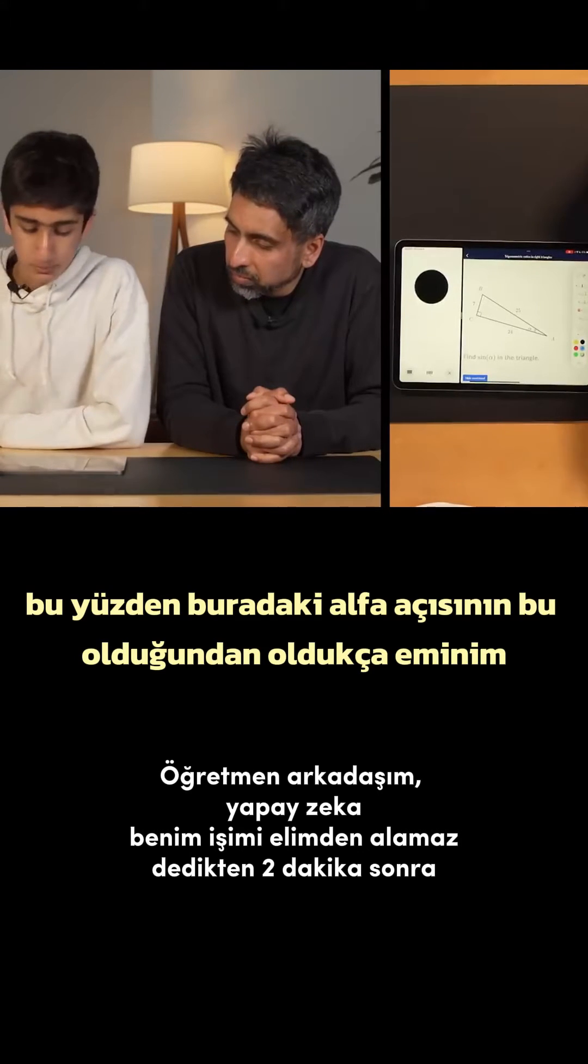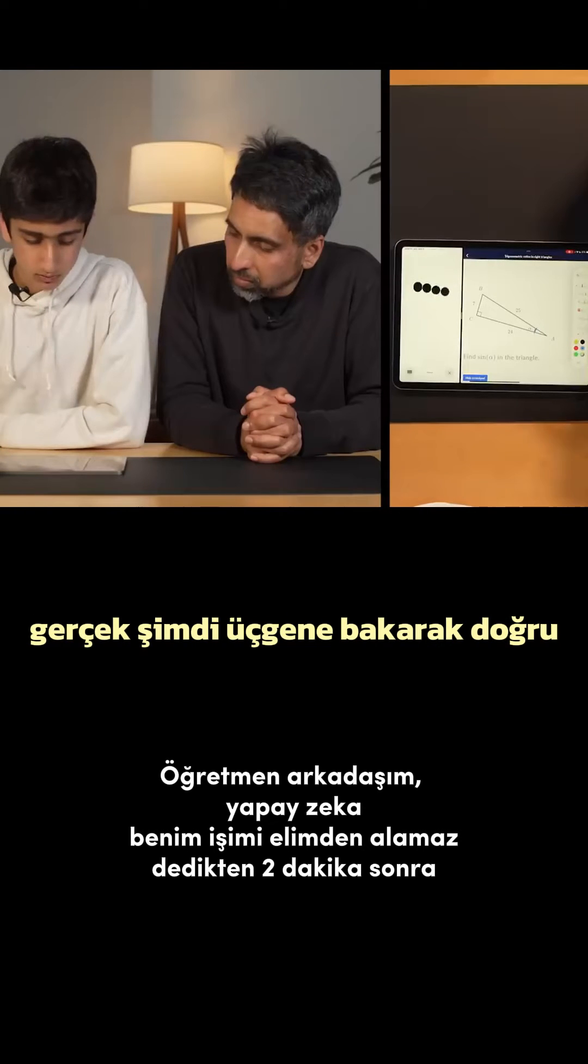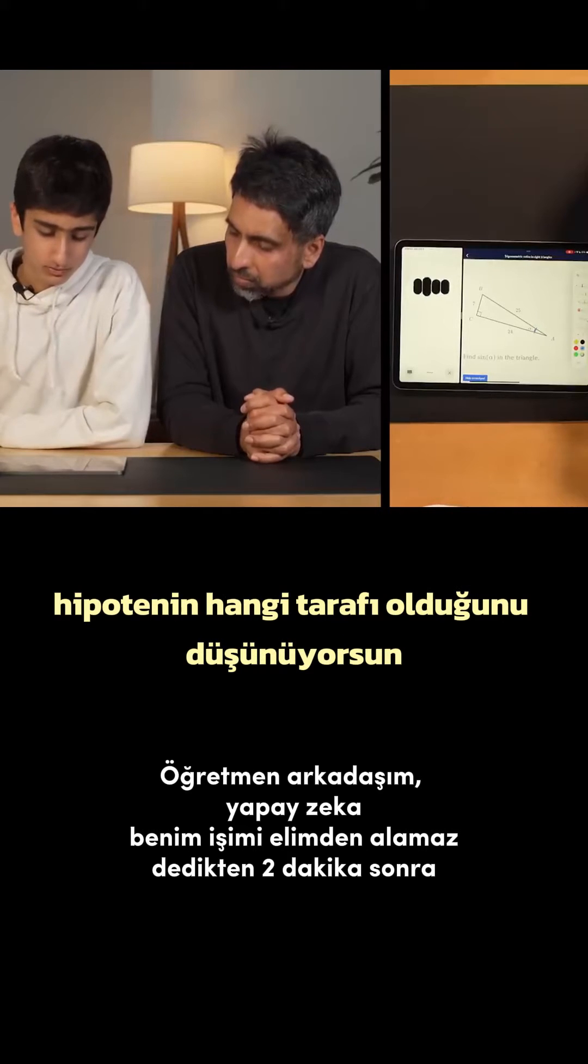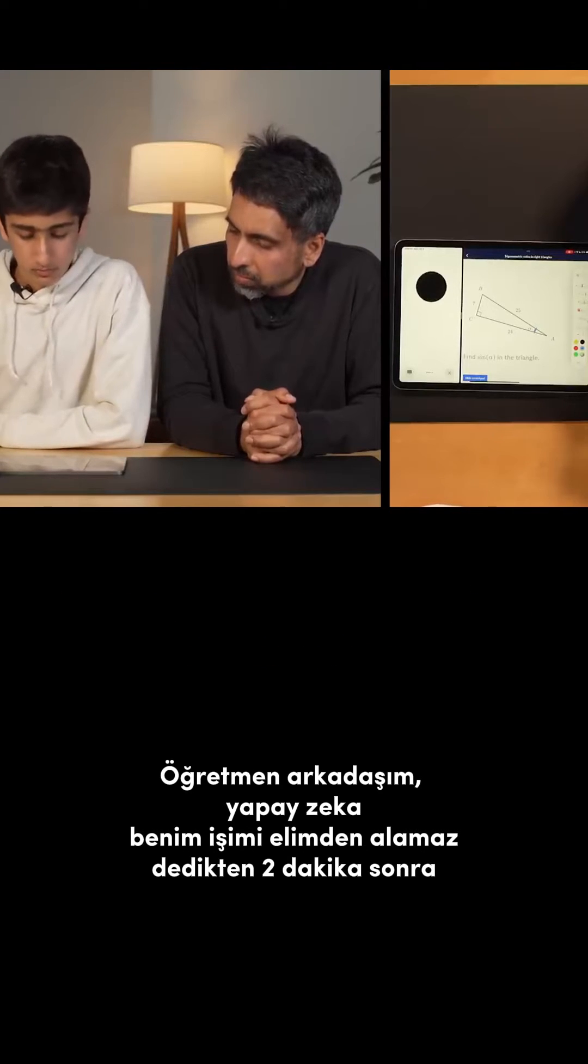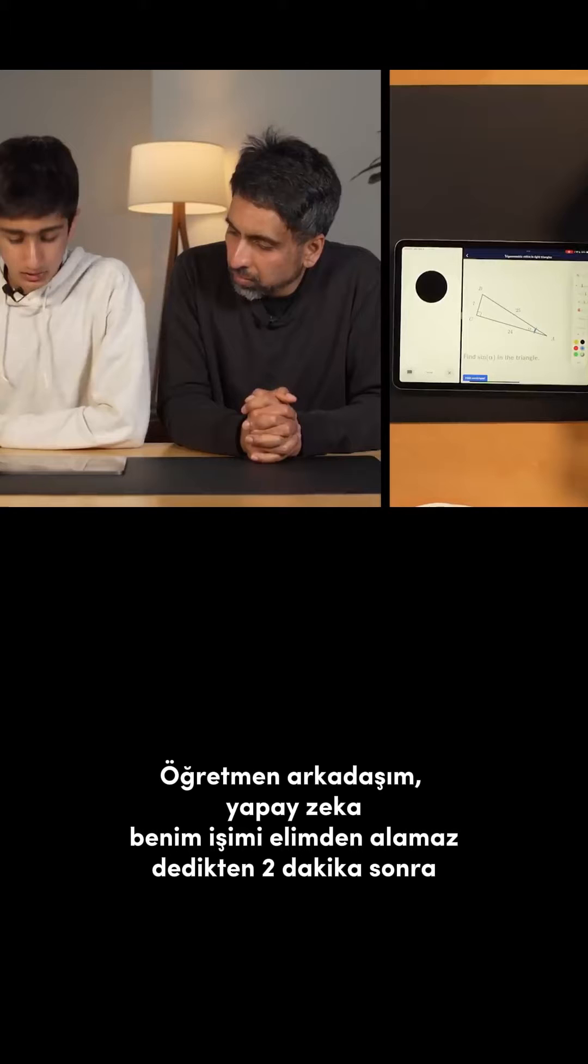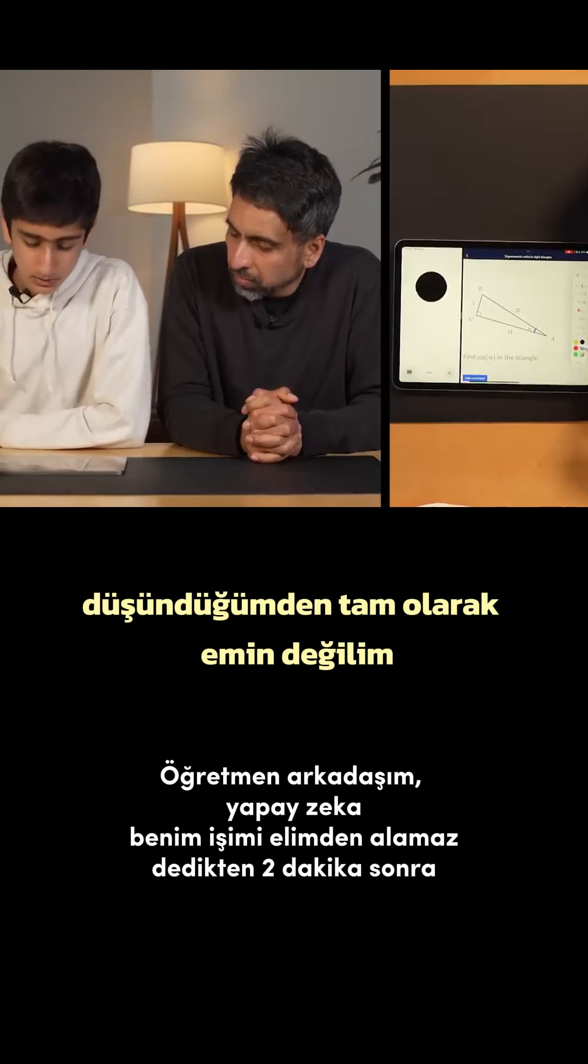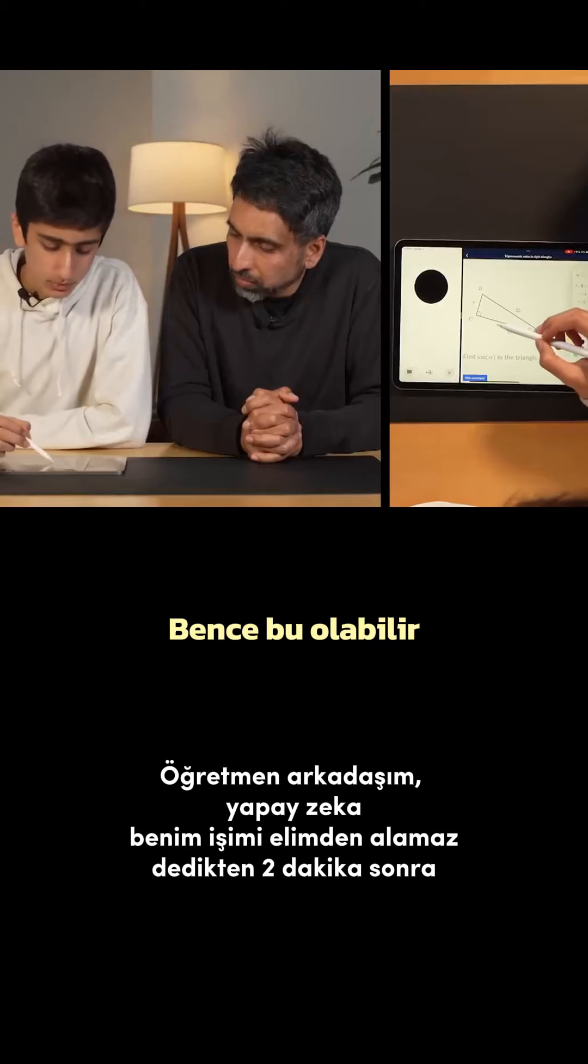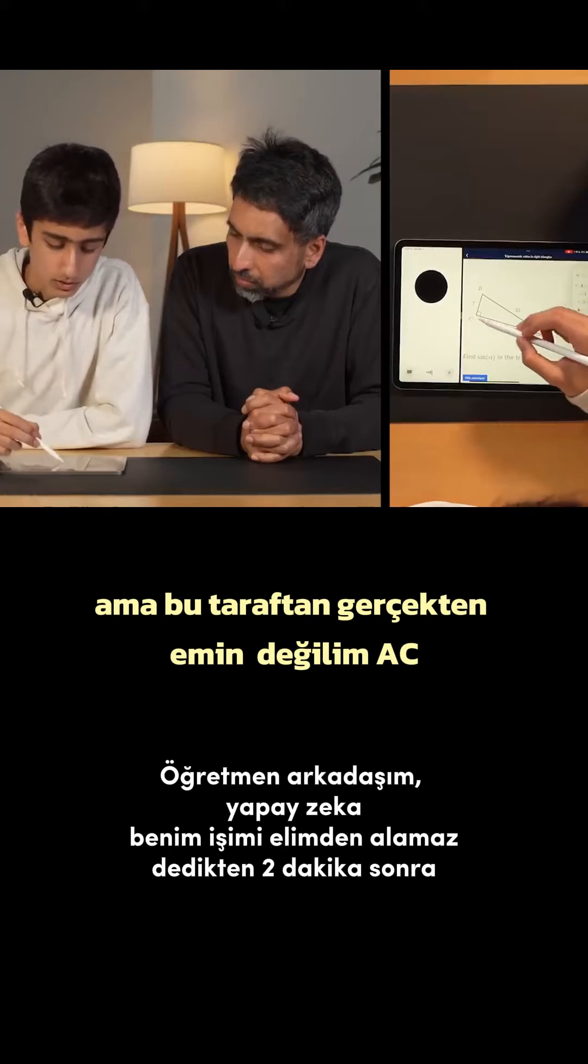Alright, so I'm pretty sure this is the angle alpha right here, right? That's correct. Now looking at the triangle, which side do you think is the hypotenuse? I'm not totally sure. I think it might be this one but I really am not sure. This side AC?